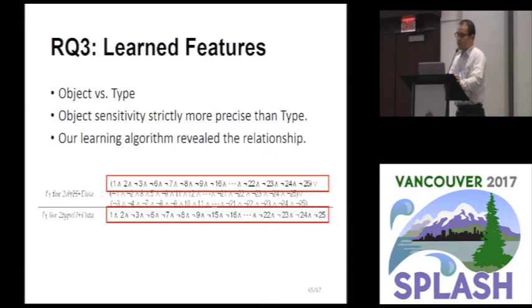Lastly, I will finish this section by introducing two interesting learning results. First, our learning algorithm revealed the precision order between object and type sensitivities. Type sensitivity is an abstracted version of object sensitivity by definition. If a method gets benefits from type sensitivity, it also gets benefits from object sensitivity. However, the reverse is not true. Keep that in mind, let's look at the learned formulas.